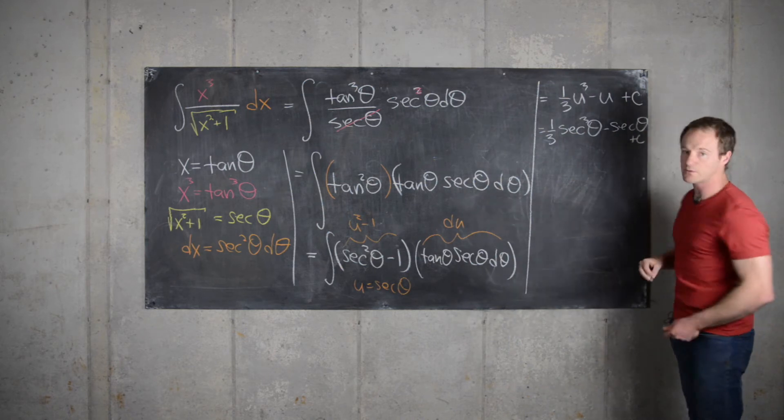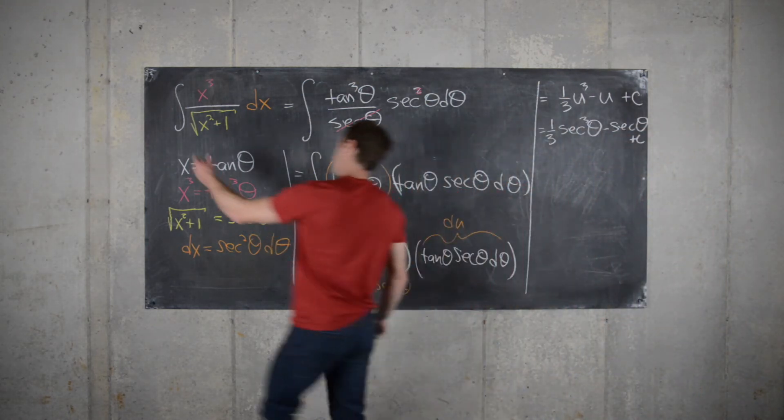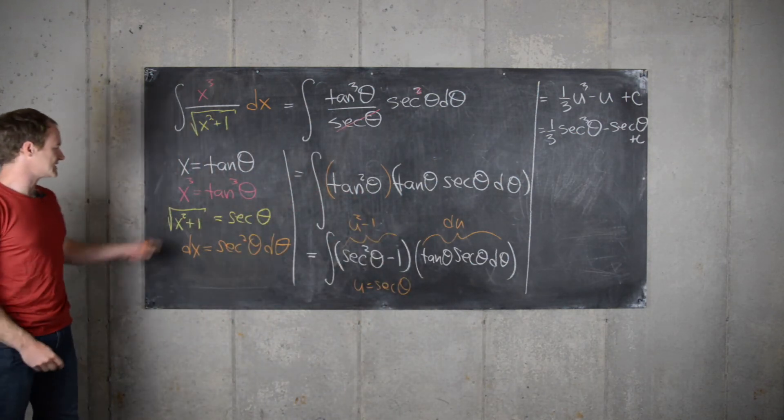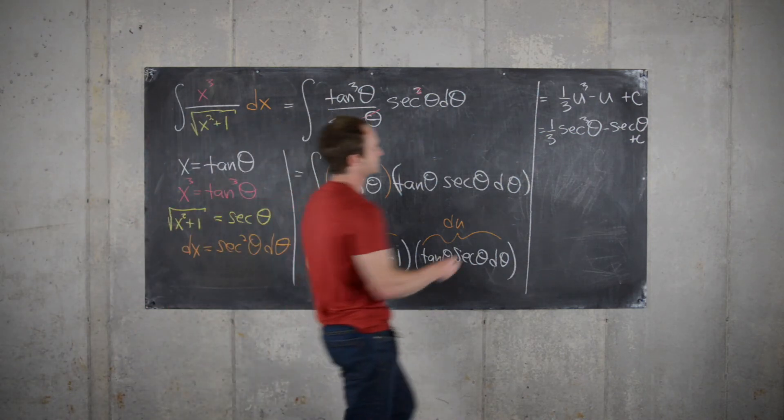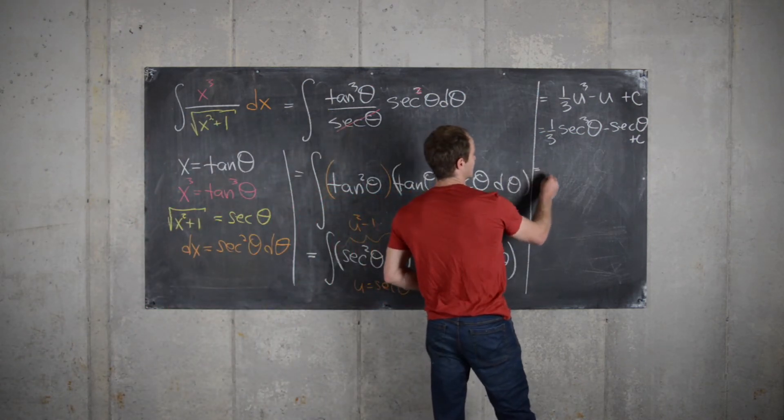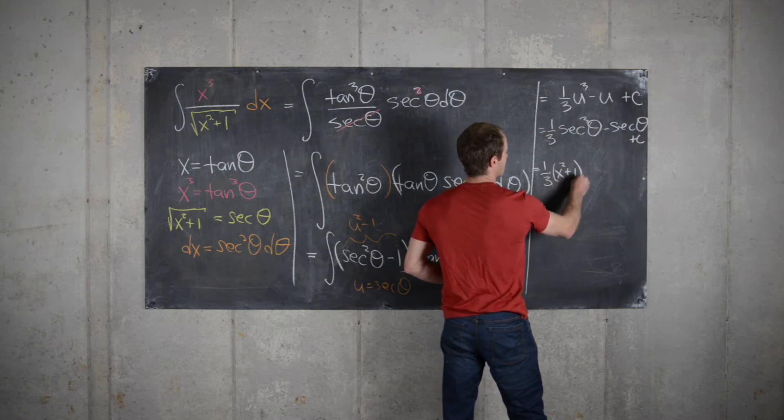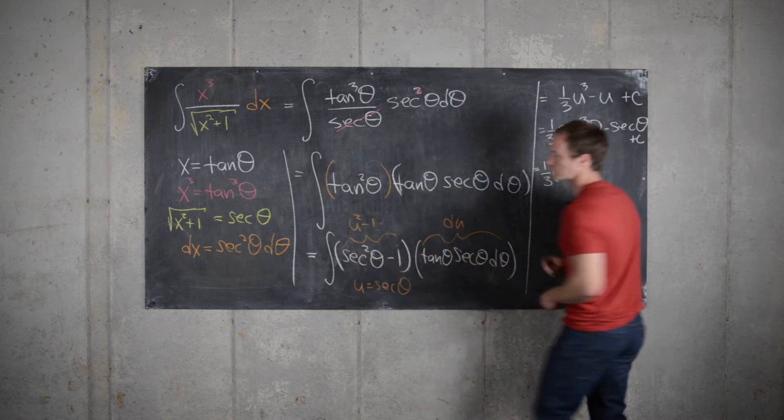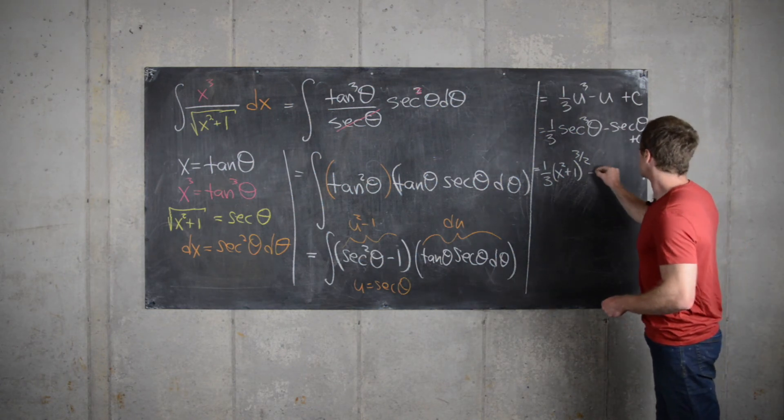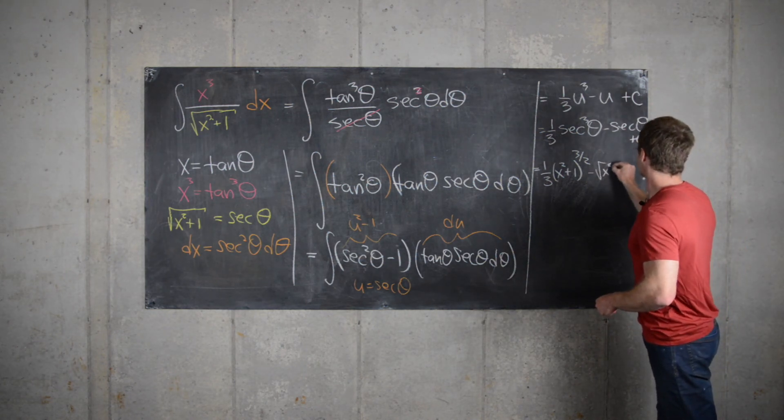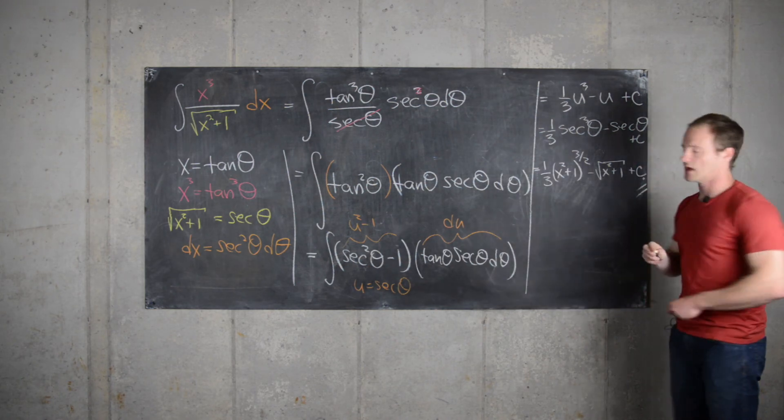And then finally, we have to put it back in terms of our original variable, but look, from our substitution, we see that secant theta is the square root of x squared plus 1. And so that will take us all the way to the end. So this will be 1 third x squared plus 1 to the 3 halves, because the square root of something cubed will be to the 3 halves, minus the square root of x squared plus 1 plus a constant. And now we're done.